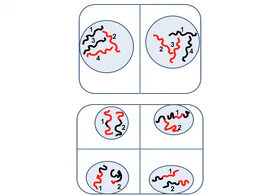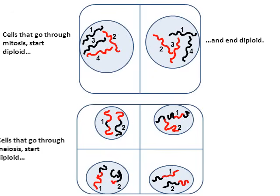This concludes the video. Cells that go through mitosis will start diploid and end diploid. But cells that go through meiosis will start diploid, and at the end they're going to have half the amount of chromatin and end haploid. That's the updated video — I hope you like it better than the original. I tried to be a little more thorough by adding crossing over. I hope this was helpful and good luck in your understanding of mitosis versus meiosis.